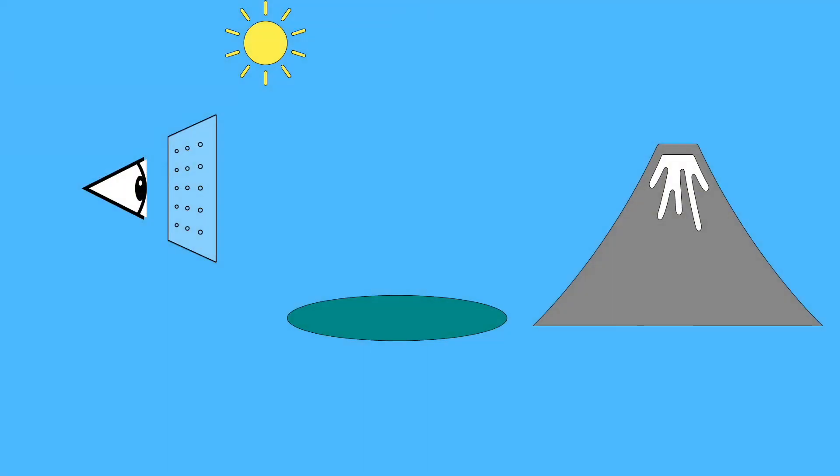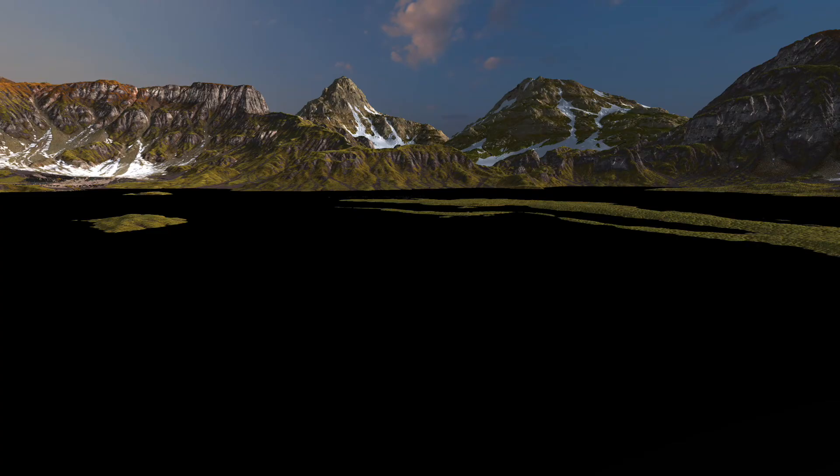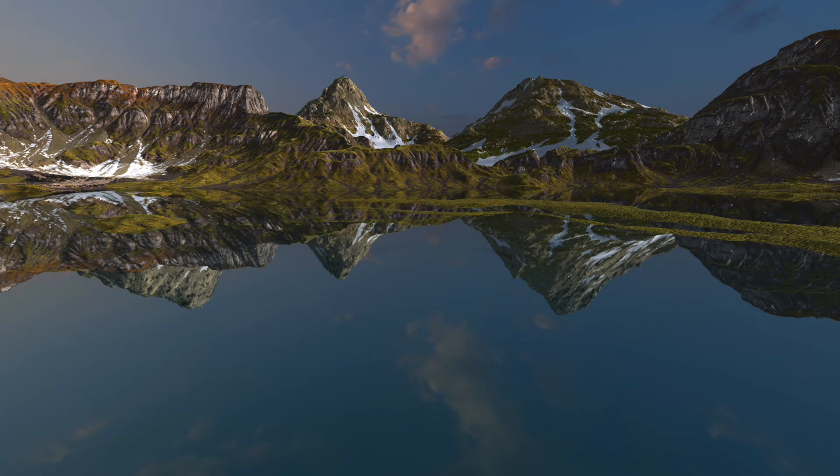When the ray from the eye hits a specular surface like the lake, we need to cast an additional reflection ray. This reflected ray hits the mountain and is shaded by the sun. If we add these reflection rays back to our ray tracer, instead of the black lake, we get this image. This is looking better.